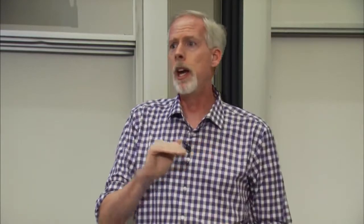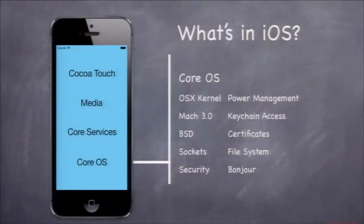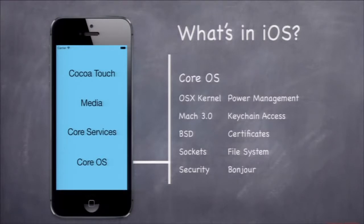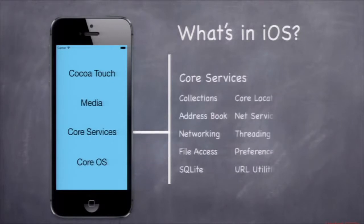At the Core OS layer, near the hardware, is a Unix kernel — BSD-based Mach — so you get everything that comes with Unix: sockets, file system, permissions, and all that. Plus you get things specific to a mobile device like power management, keychain access for security, and Bonjour for finding other things on the network. It's a very powerful underlying operating system, but most of that API is in C, and we want to program in an object-oriented layer.